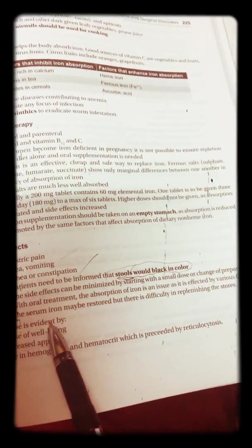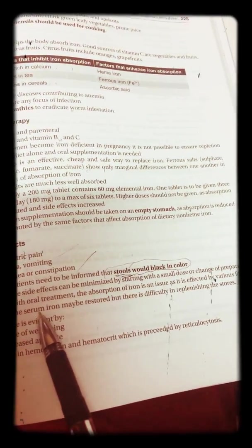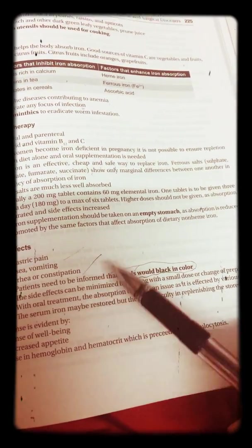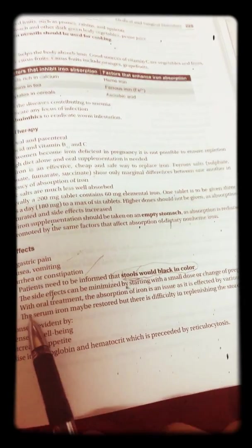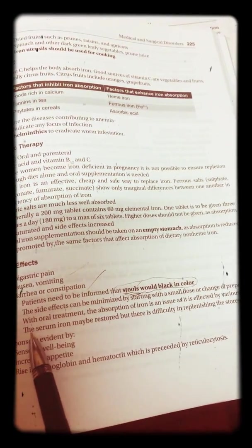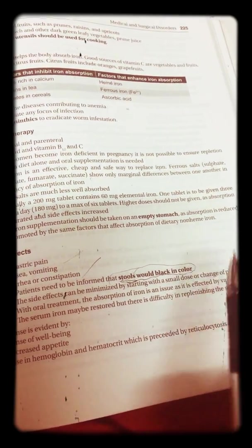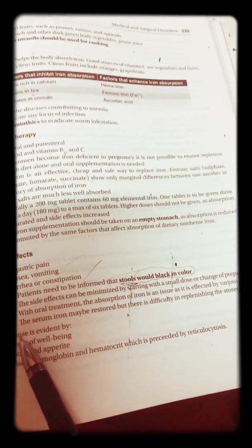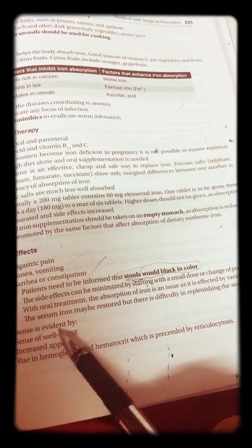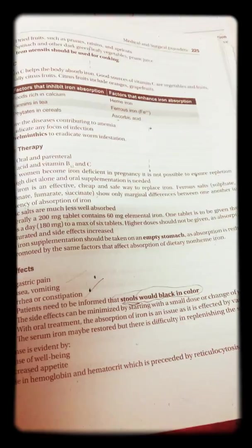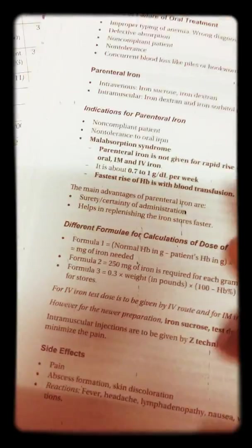With oral treatment, absorption of iron may be an issue due to various factors such as helminthic infection or obstruction; hence parenteral iron is encouraged for immediate restoration of blood iron. Serum iron may be restored but it is difficult to replenish the stores. Response to treatment is evident by a sense of well-being, increased appetite, and rise in hemoglobin and hematocrit, which precedes the reticulocyte response.